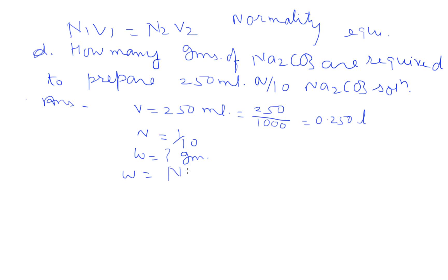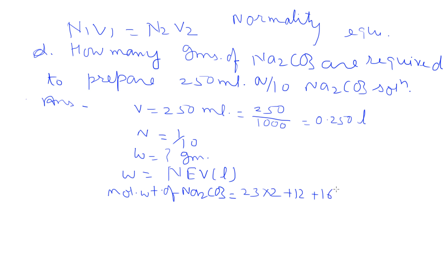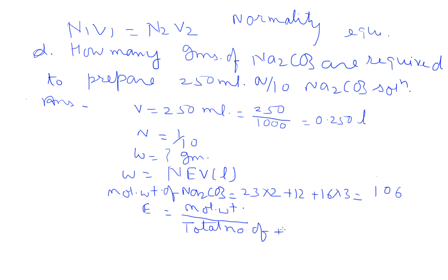For W = N*E*V, we need equivalent weight. Molecular weight of sodium carbonate is (23×2) + 12 + (16×3) = 106. Equivalent weight equals molecular weight divided by total number of positive or negative valences. The total valence is 2, so equivalent weight = 106/2 = 53.